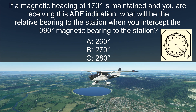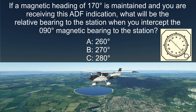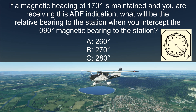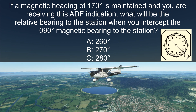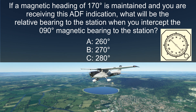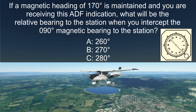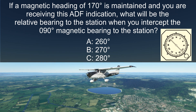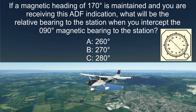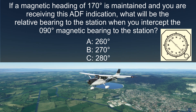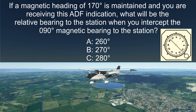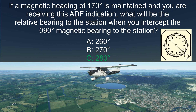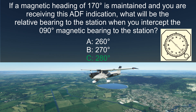So the answer to the question — if a magnetic heading of 170 degrees is maintained and you're receiving this ADF indication, what will be the relative bearing to the station when you intercept the 090 degrees magnetic bearing to the station — is C: 280 degrees.